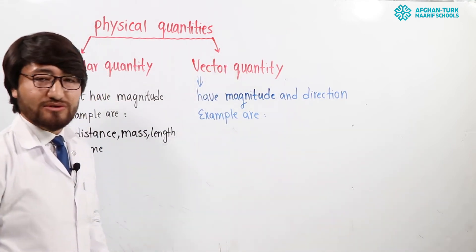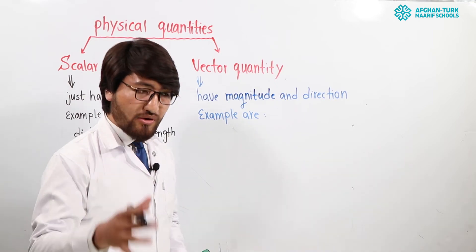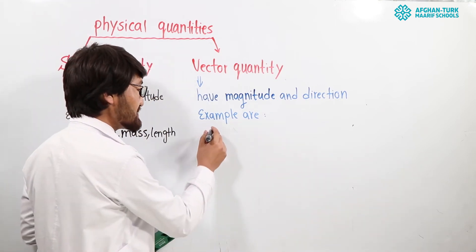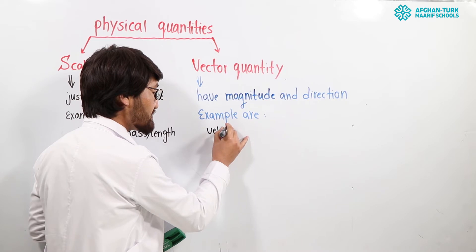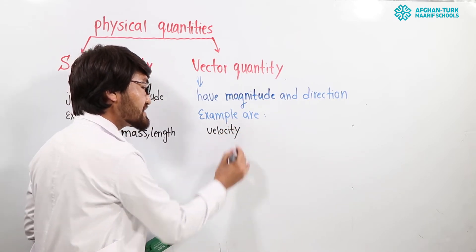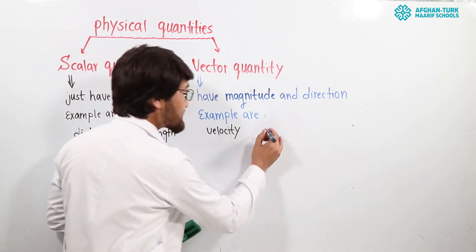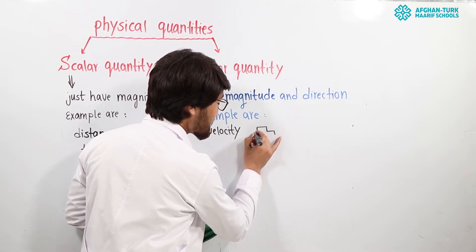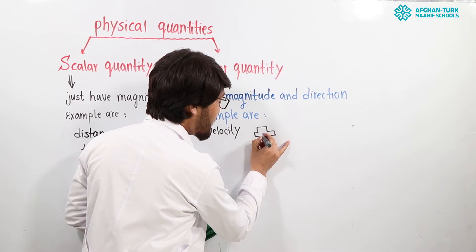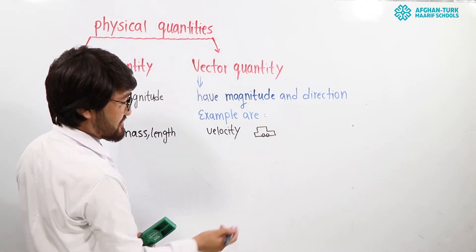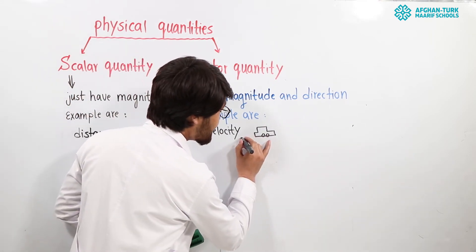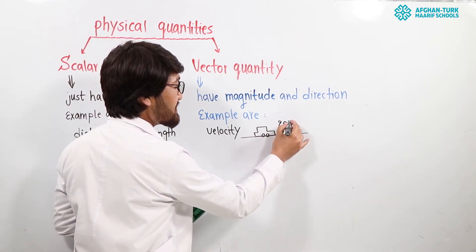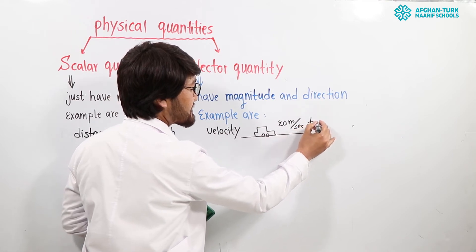Now let's come to vector quantity. What is vector quantity? Vector quantities are those quantities that have both magnitude and direction. For example, velocity is a vector quantity. Suppose it is a car — the car is moving with 20 meters per second to the right.